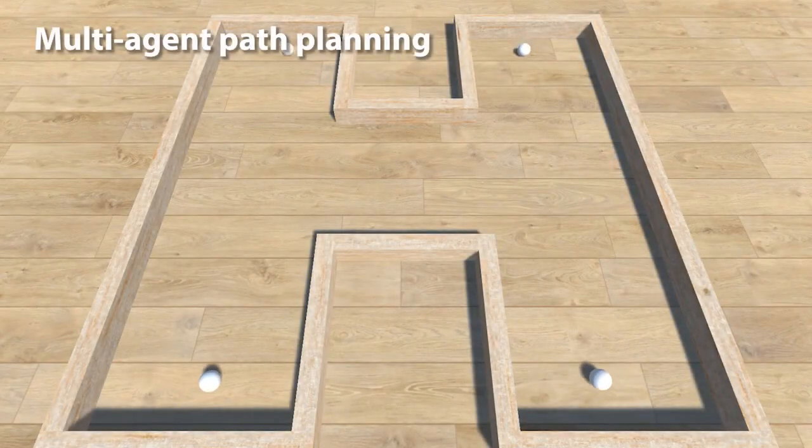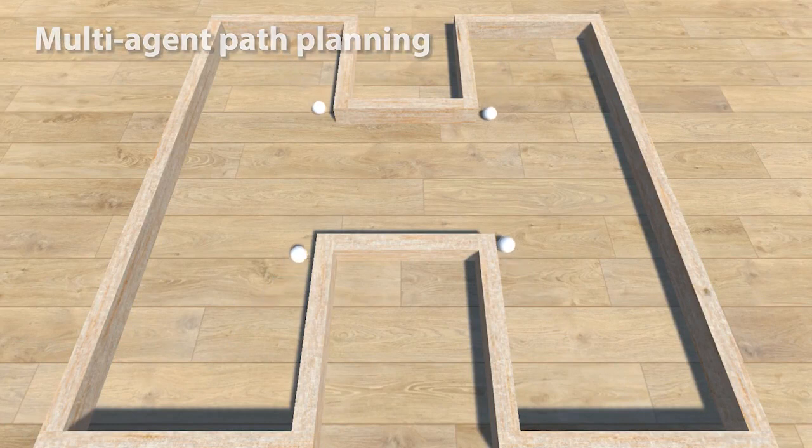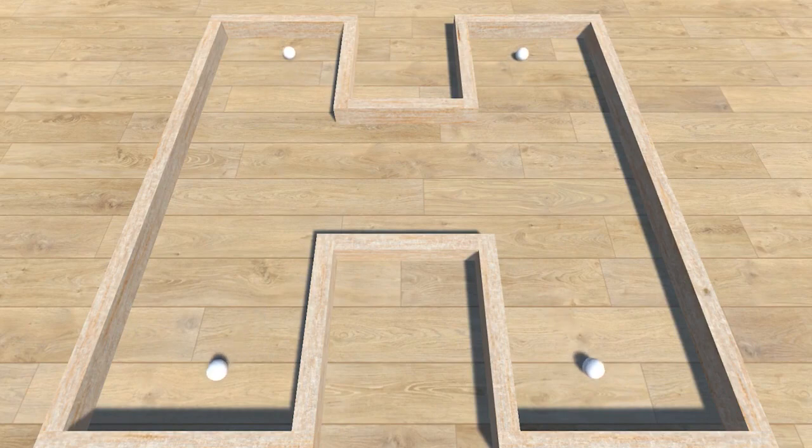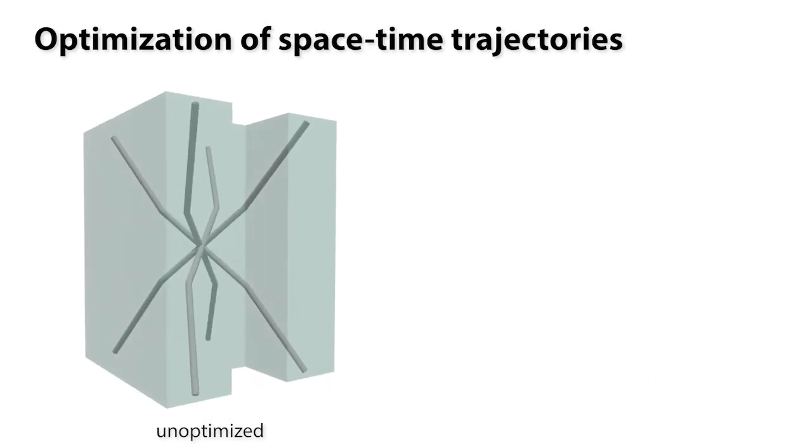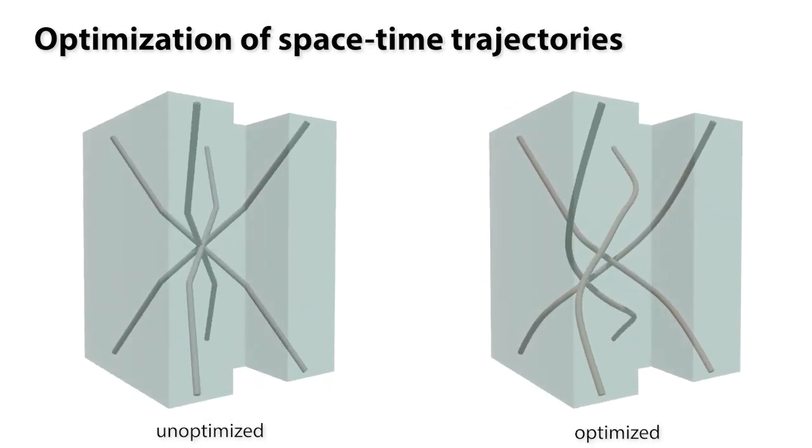Repulsive curves can also be used for multi-agent path planning. In this initial plan, the agents inadvertently collide with each other as they move through the central area. If we interpret the plan as a set of trajectories where the vertical axis represents time, we can use the repulsive curves framework to optimize them.